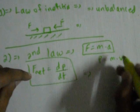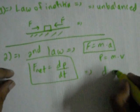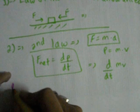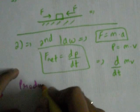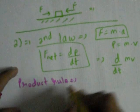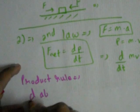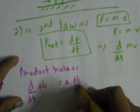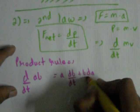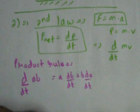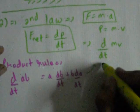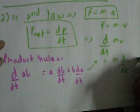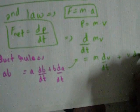Now, putting mass times velocity in the equation, we get d(mv) by dt. And we have product rule of differentiation. Applying this rule over here,